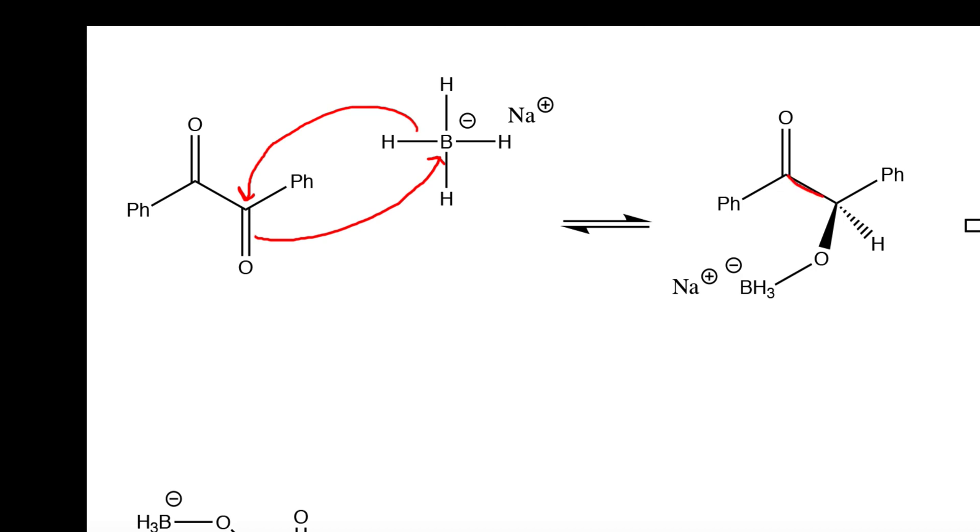Also remember that single bonds can rotate. This is important because after we perform this first reduction, this will cause the molecule to rotate along this single bond to form a stable three-dimensional conformation.